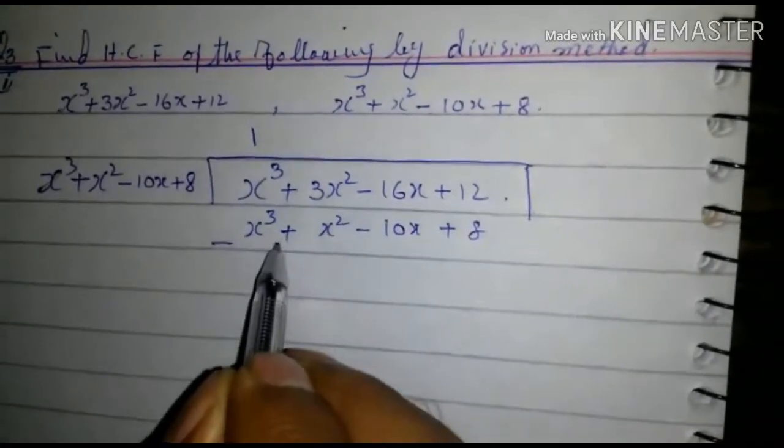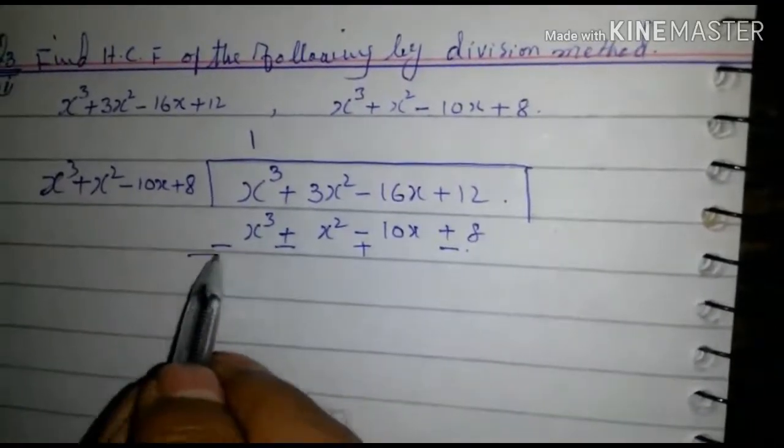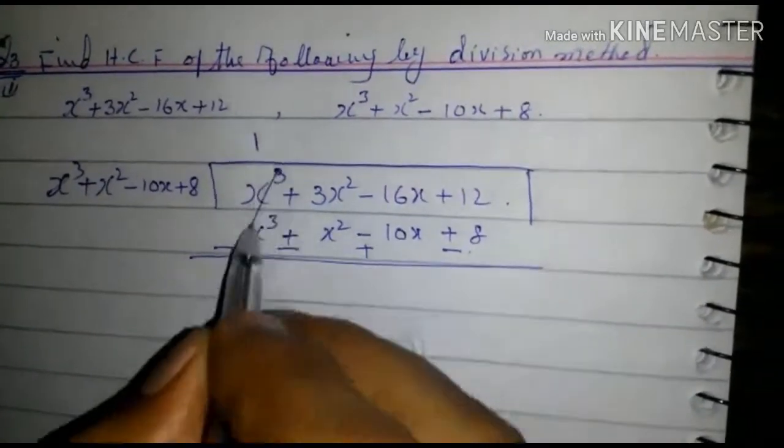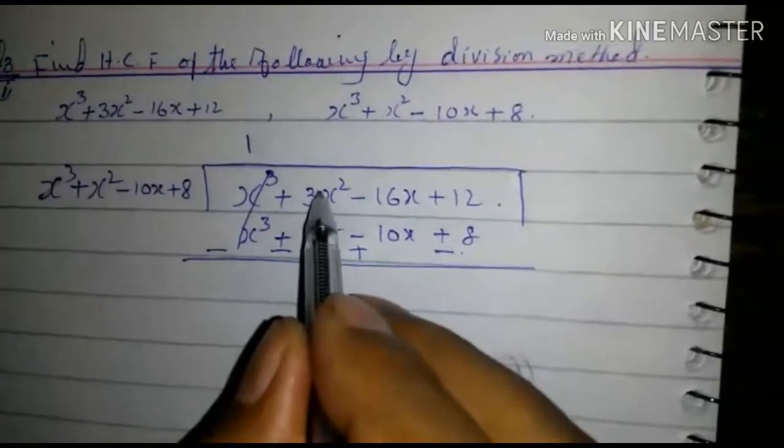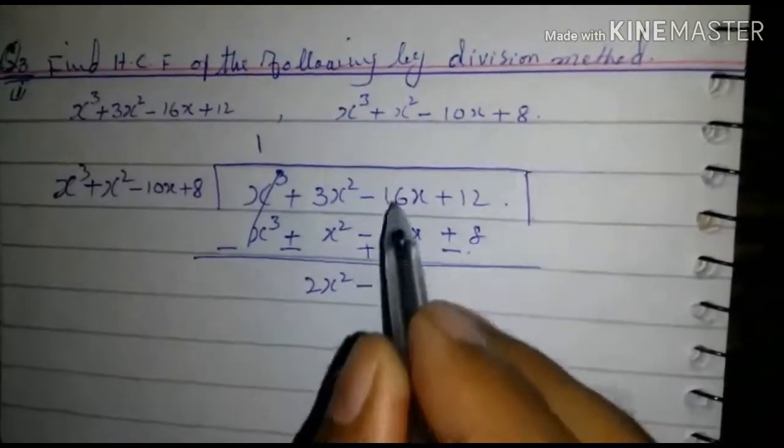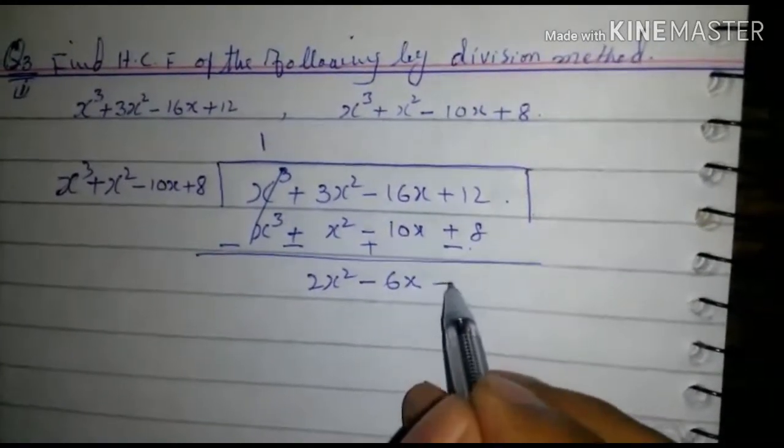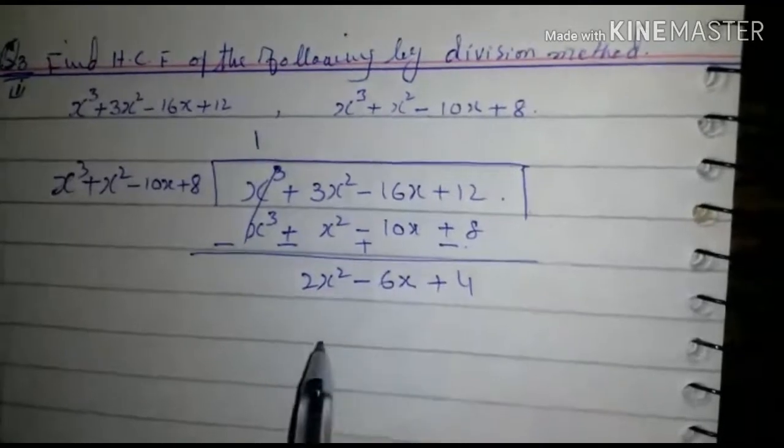Now we change the symbols: minus, plus, minus. Cancel 3 minus 1 equals 2. 2x² - 6x + 4.